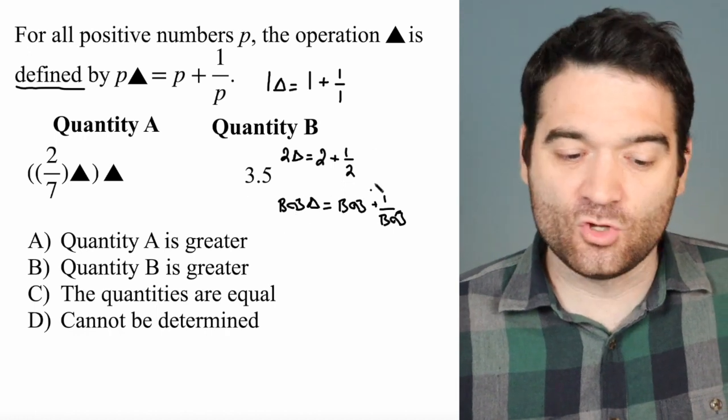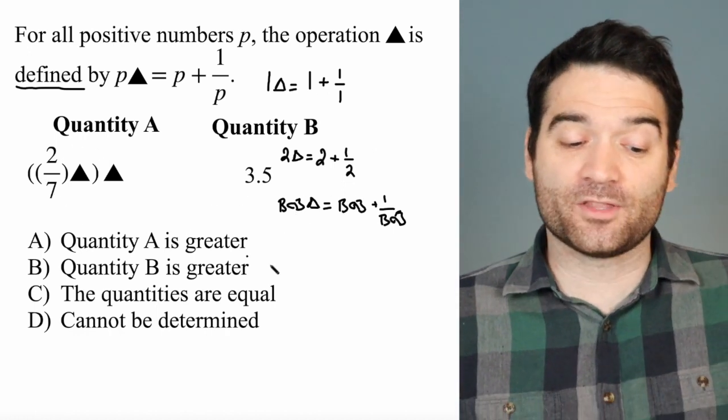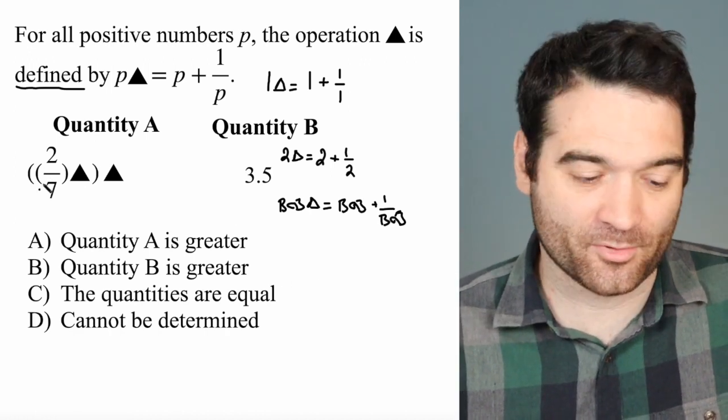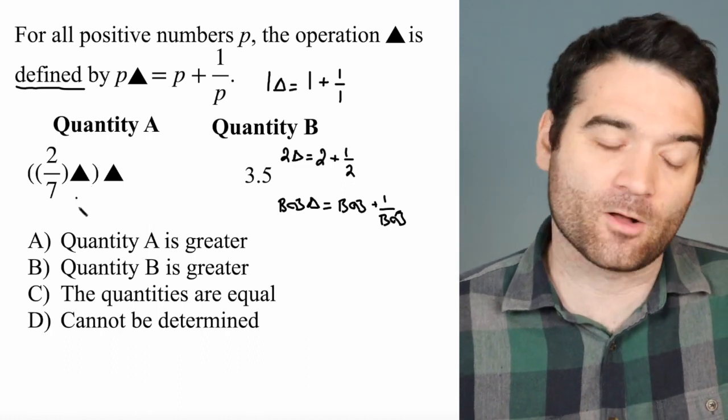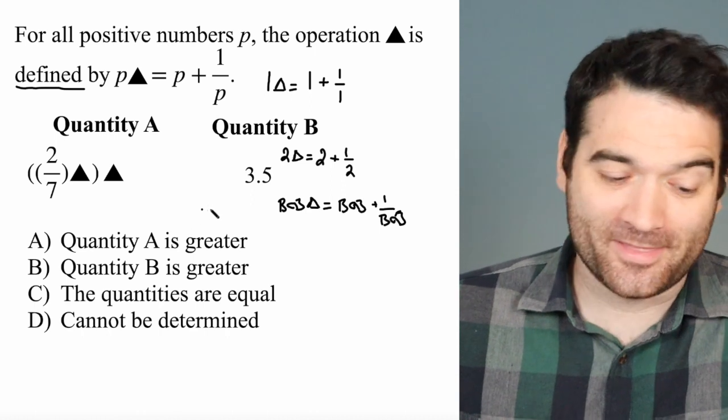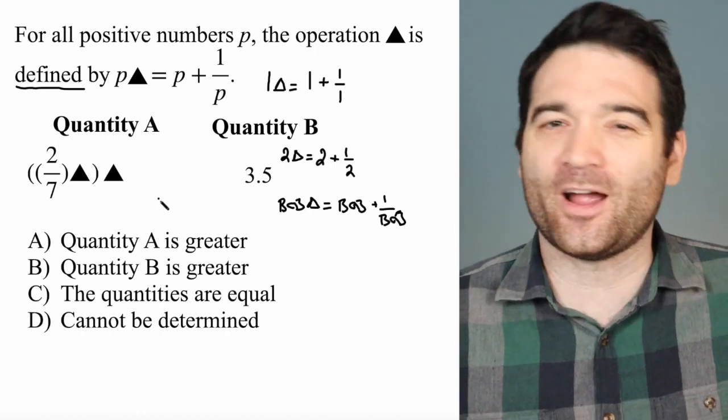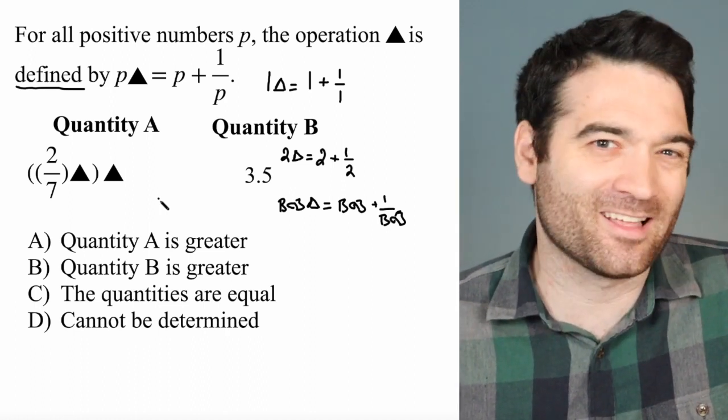So let's use this knowledge now to evaluate the expression that we have here: 2 sevenths triangle. And this is nested, right? So it's like a parenthesis within a parenthesis. We'll start with the inside one, which is 2 sevenths triangle. Well, I could write this out as 1 plus 1 over 2 sevenths. But then I have fractions within fractions. It's a lot of fraction manipulation. It's not a lot of fun.